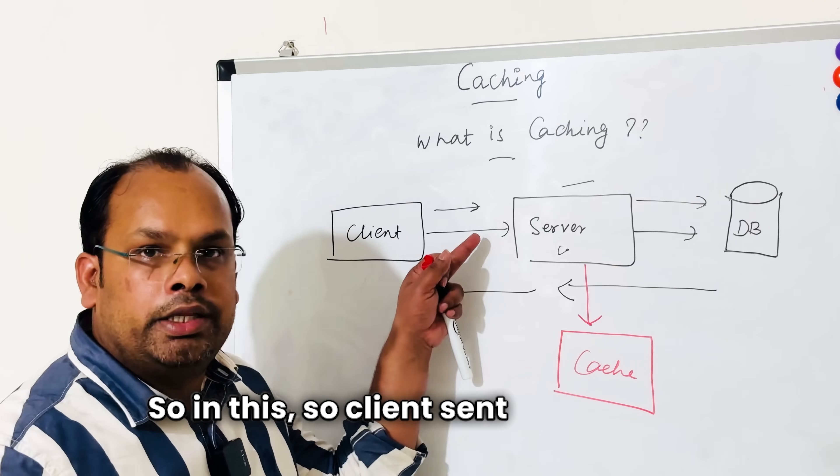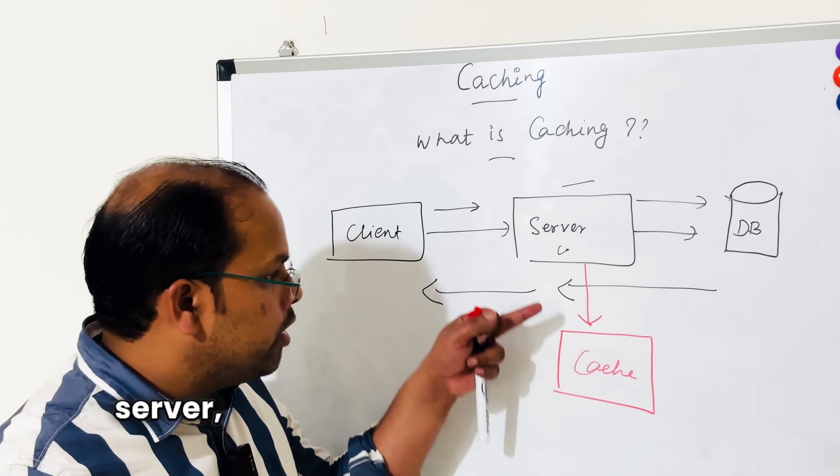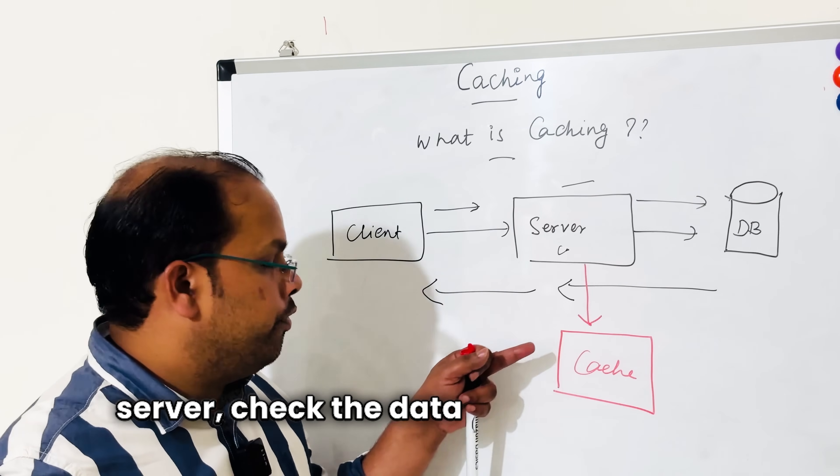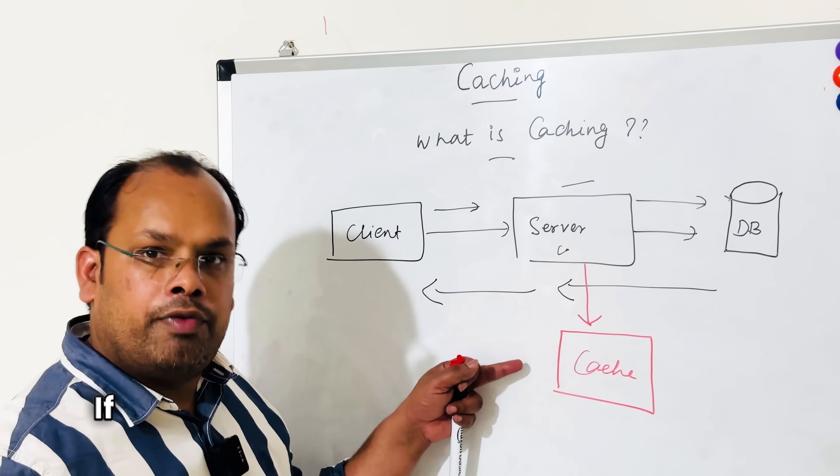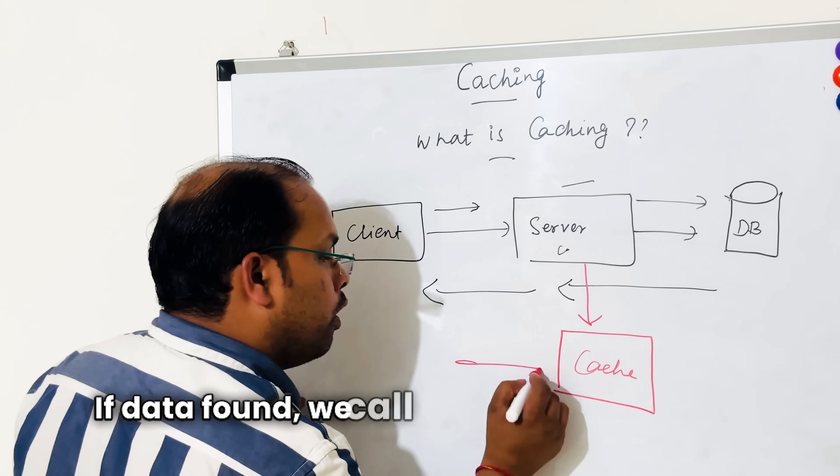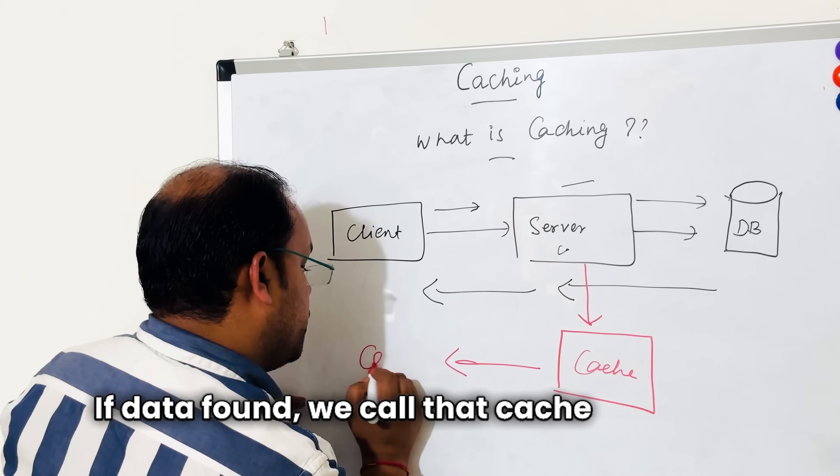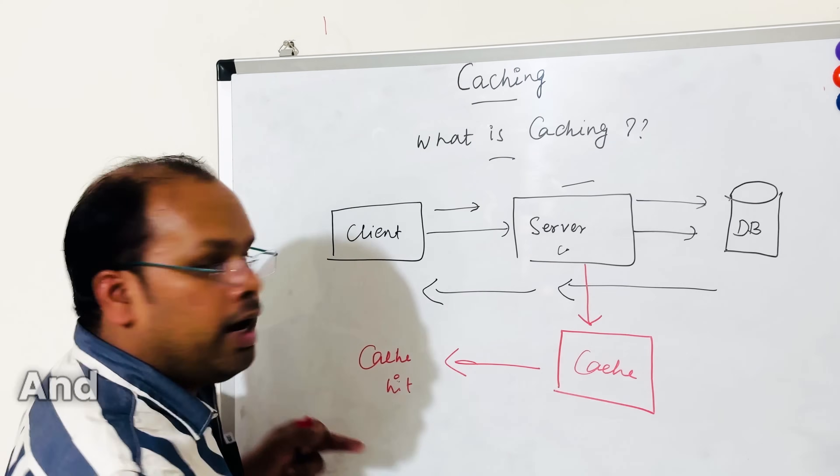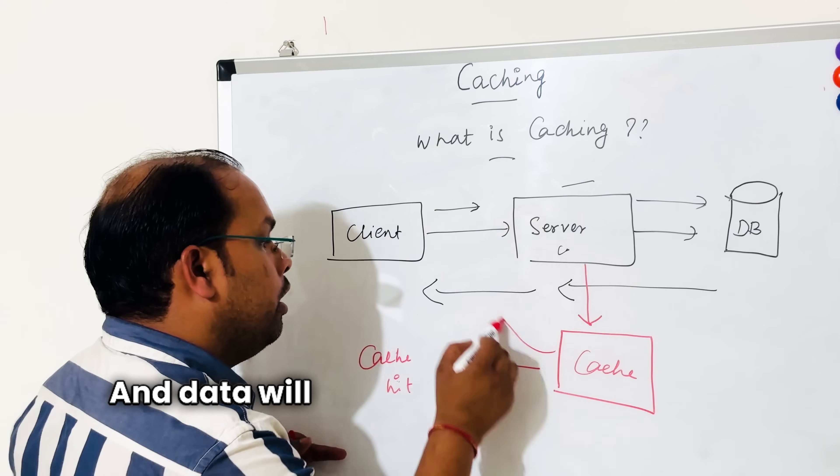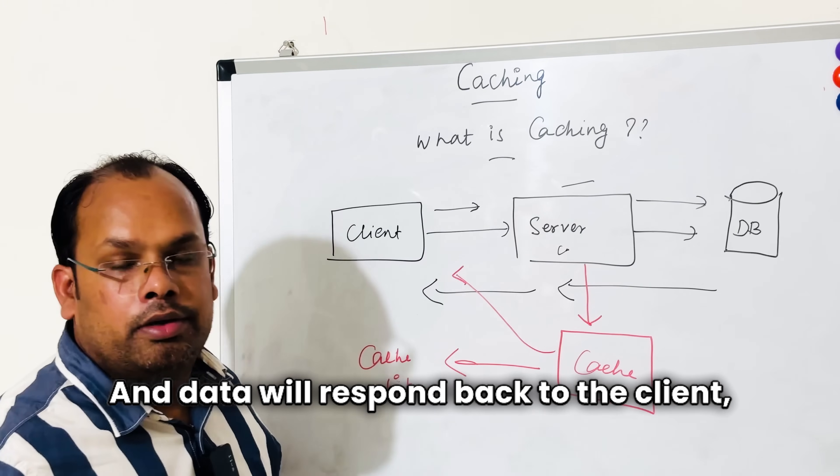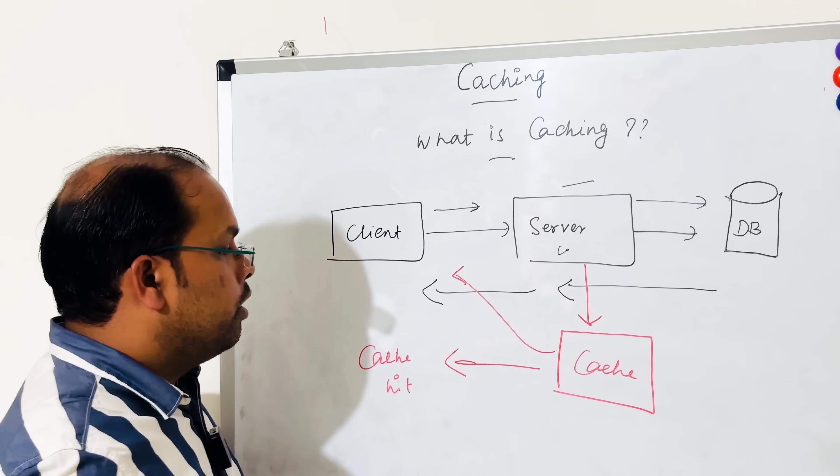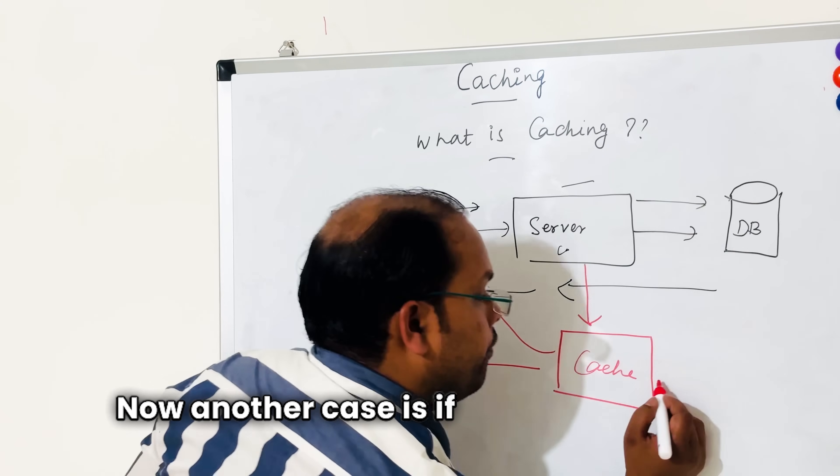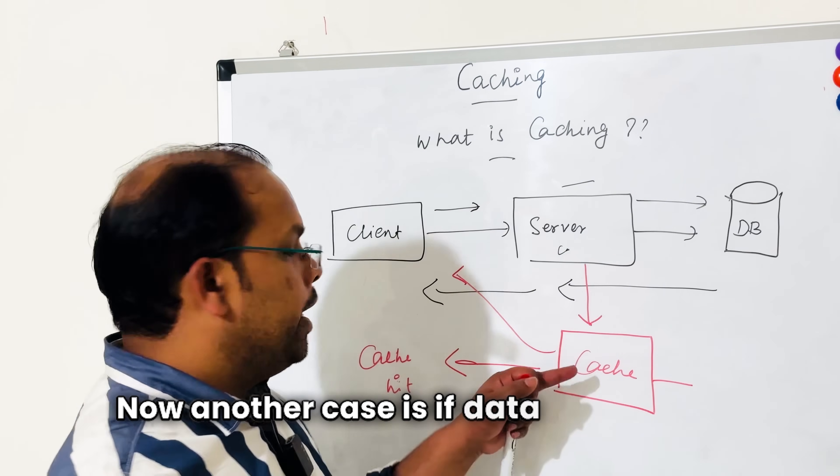So the client sends the request, the server checks the data first from the cache. If data is found, we call that a cache hit, and data will respond back to the client.